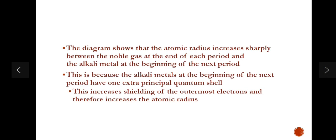This is because the alkali metals at the beginning of the next period have one extra principal quantum shell. Going down to the successive group increases the shielding of the outermost electrons, which weakens the nuclear attraction and therefore increases the atomic radius.